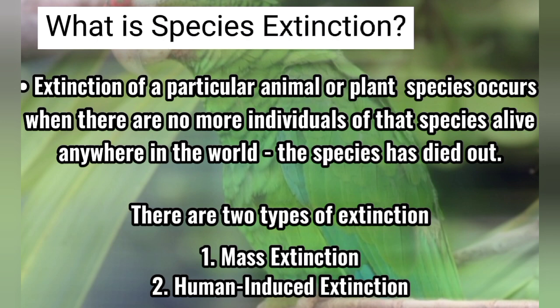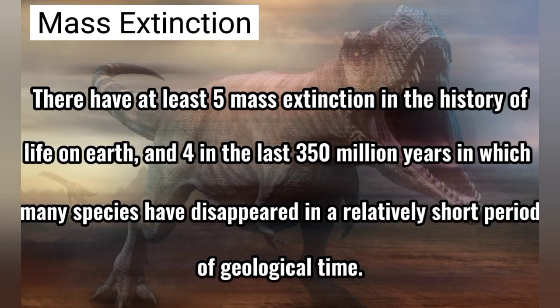There are two types of Extension. Number one, mass extension. And number two, human-induced extension. There are at least five mass extensions in the history of life on Earth, and four in the last 350 million years, in which many species have disappeared in a relatively short period of geological time.